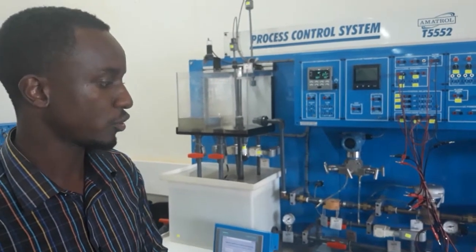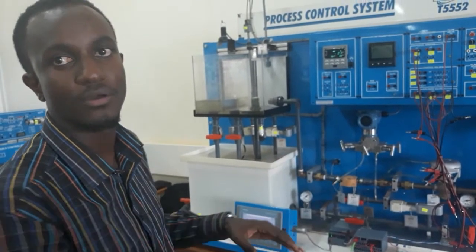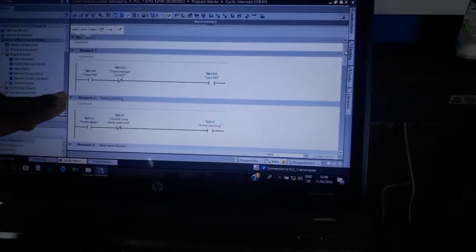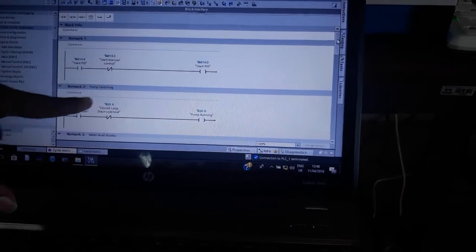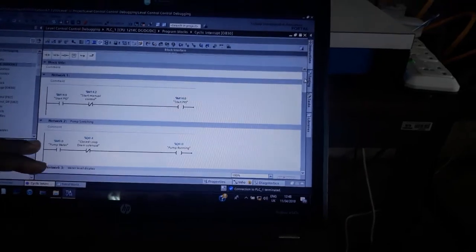For this part, I'll take you through the code. We have finished the hardware, both the PLC part and the HMI part. Now I'll take you through the code so that you can see our logic. From the code, you can see that the first network is just for starting the PID. This is a memory bit which can be accessed from the HMI.